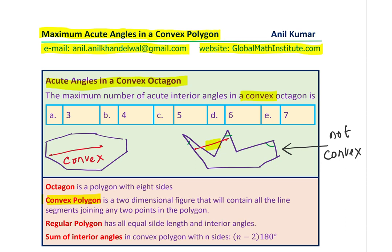This kind of non-convex polygon can have many acute angles, but the question relates to a convex octagon. So in a convex octagon, we are looking for the maximum number of acute angles. There are other related terms: a regular polygon has all sides and interior angles equal. The general formula for the sum of interior angles is (n − 2) × 180 degrees, where n is the number of sides.